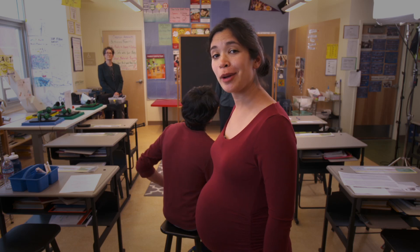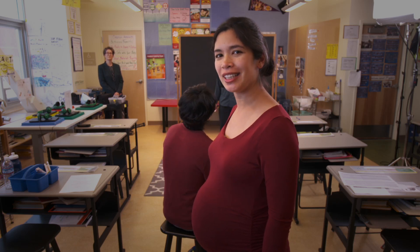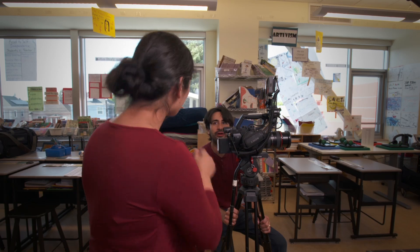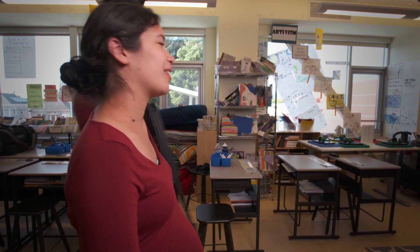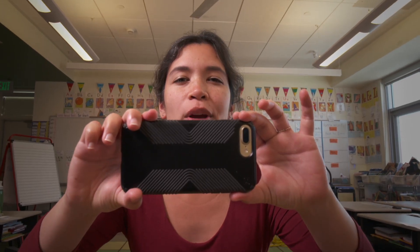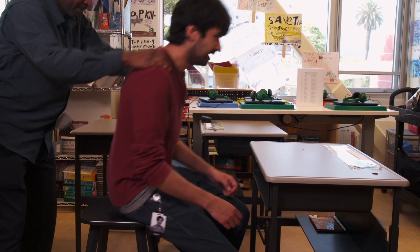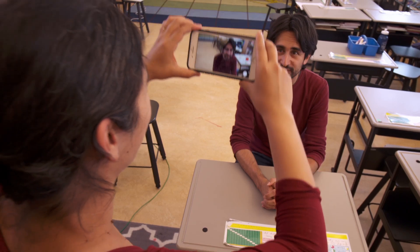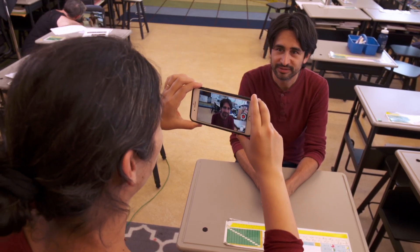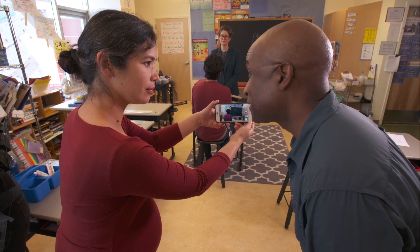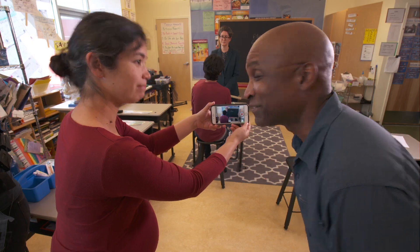I bet we could use film grammar to make this lesson connect more emotionally. Let's do it. We're going to try something different. First, let's change the camera position and framing to convey the student's point of view. Then let's stage the shots a little differently so the teacher interacts directly with the student. And let's add motion so that the camera is responding to the teacher. Let's edit it and see how it cuts together.